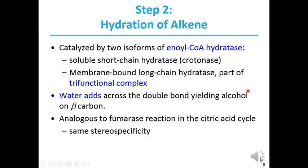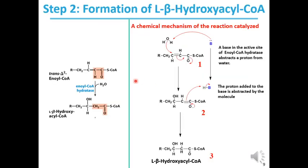The second step in this process involves the hydration of an alkene, catalyzed by two isoforms of enoyl-CoA hydratase. This enzyme adds a water molecule across the double bond. The first isoform is a soluble short-chain hydratase called crotonase. The second is a membrane-bound long-chain hydratase that is part of a trifunctional complex. This enzyme adds water across the double bond, yielding an alcohol on the beta carbon. This reaction is analogous to the fumarase reaction in the citric acid cycle, and both reactions have the same stereospecificity.